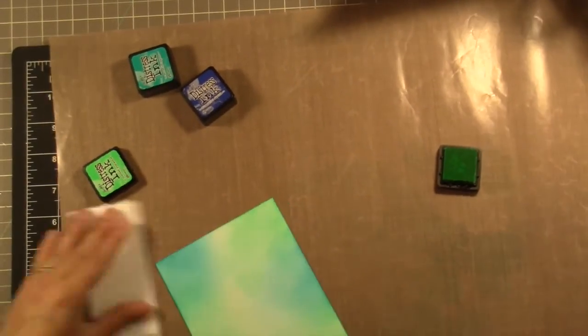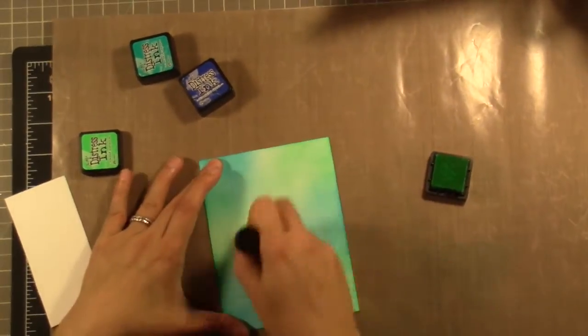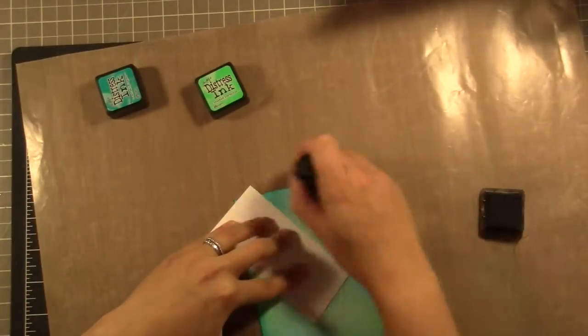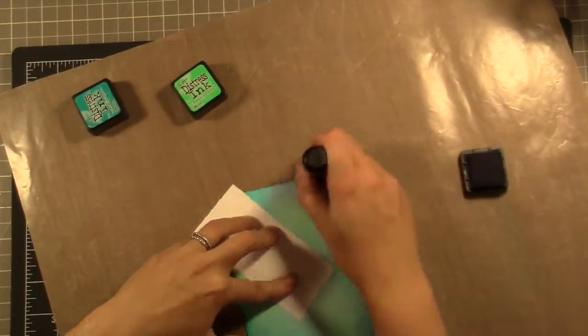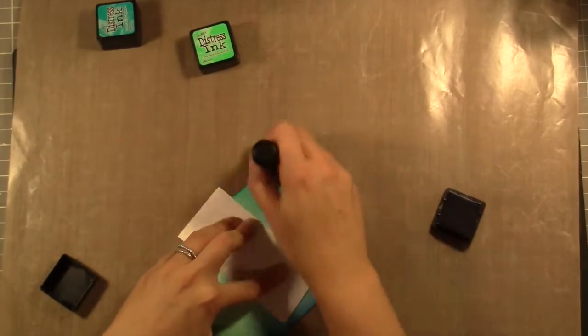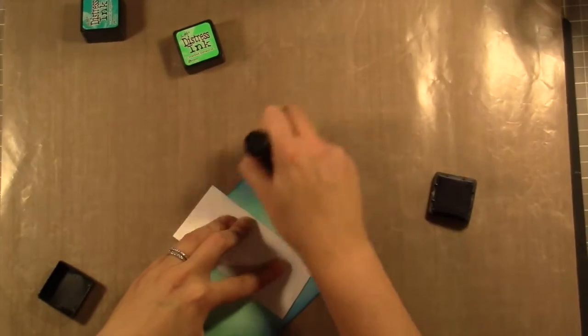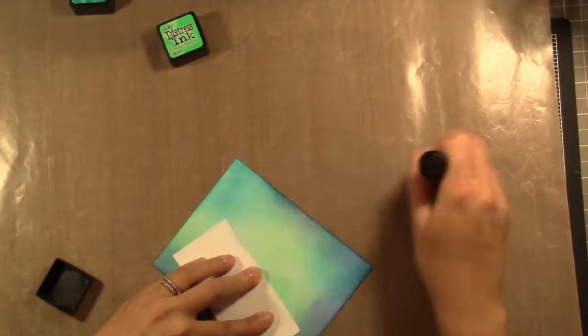I went to some ink blending backgrounds. The first thing I did was I took a piece of Tim Holtz watercolor distress paper, and I am using three different colors of distress inks, which happens to be a new favorite combo of mine. They are in the colors Crack Pistachio, Mermaid Lagoon, and Blueprint Sketch, which is around the edges.